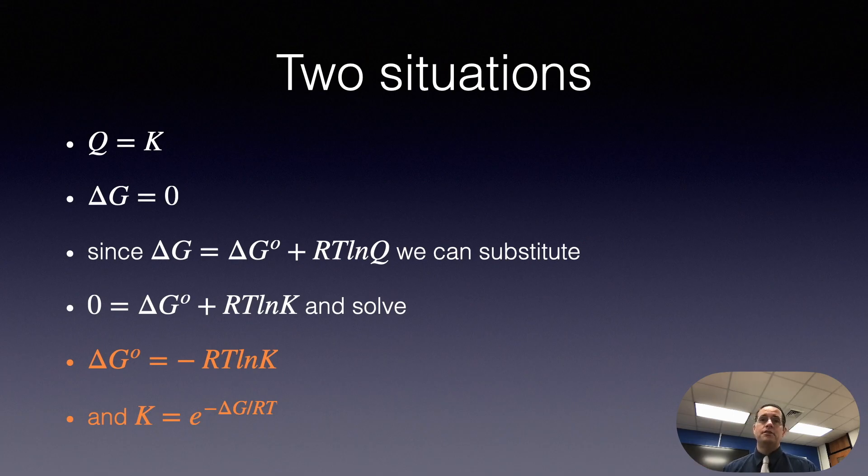So if I told you, hey, the free energy change for a chemical reaction is, you know, negative 55 kilojoules per mole or whatever, you could slap it into this formula and calculate the equilibrium constant. So it's a very useful formula.